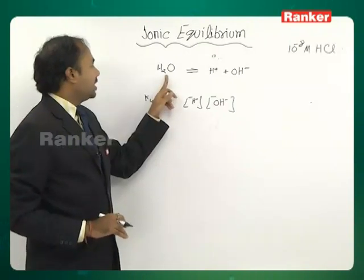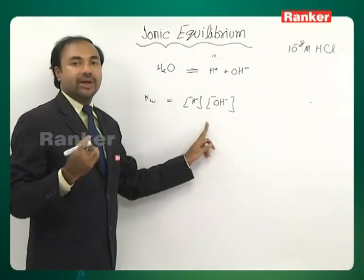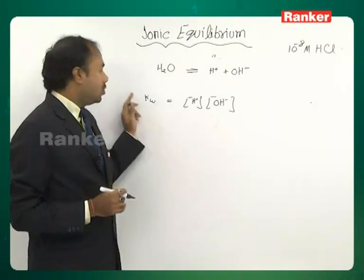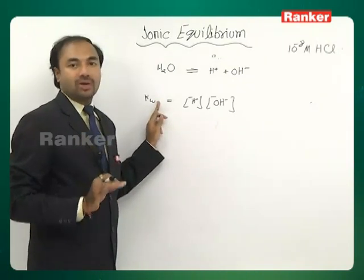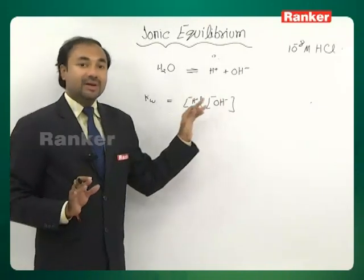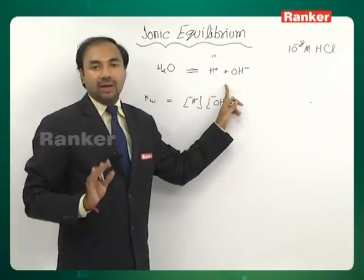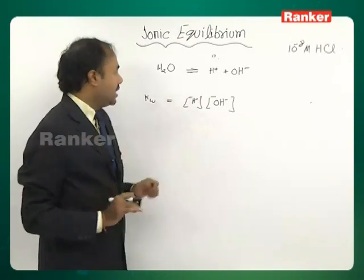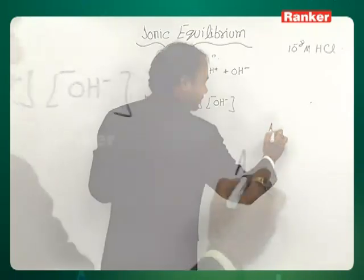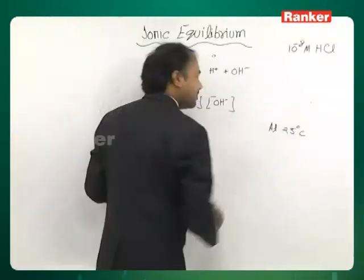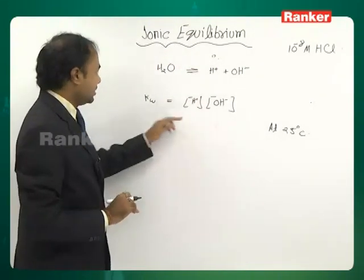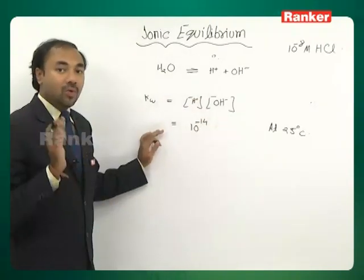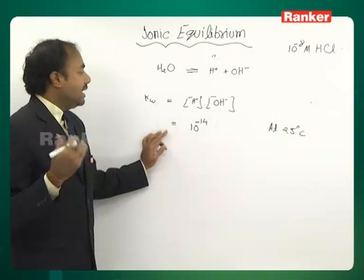We do not include the concentration of water in the expression because at a particular temperature its concentration remains constant — it is already absorbed into Kw. This equation is always valid regardless of whether the solution is acidic, basic, or neutral. At 25°C, Kw = 10⁻¹⁴. Remember this is valid only at 25°C. As you change the temperature, because the forward reaction is endothermic, increasing temperature shifts equilibrium forward, increasing Kw.